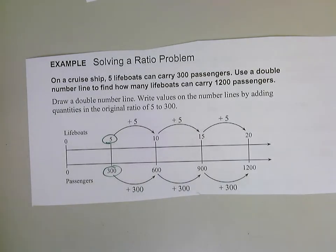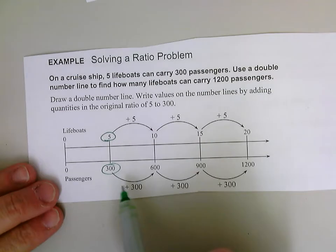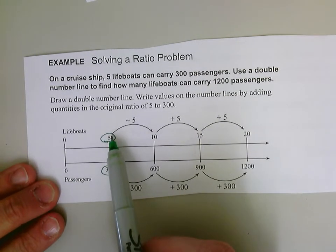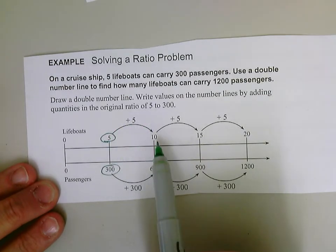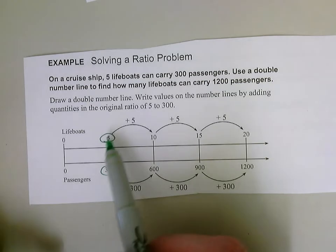So I want to try to get to 1,200 because I have 1,200 passengers that are going to be on this cruise ship. So what we can do for our ratios is I'm going to add in the same increments. If I start with five, I'm going to add five. I'm doubling it. I'm going to double five for my lifeboats, and I'm going to double the 300 for my passengers. So as long as I'm doubling this and doubling that, I'm going in the same increments.